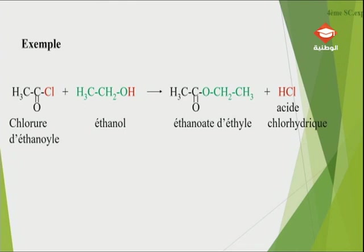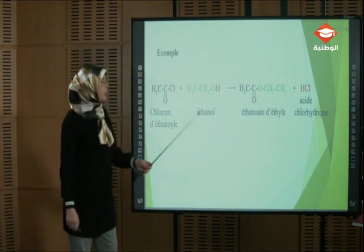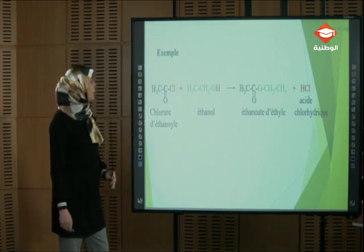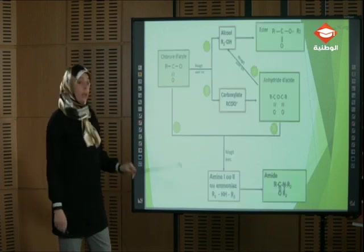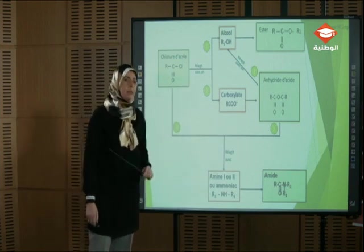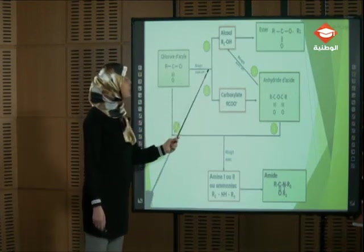Exemple : le chlorure d'éthanoïl réagit avec l'éthanol pour former l'éthanoate d'éthyle et l'acide chlorhydrique. L'estère contient deux carbones de chaque côté. Comme on a vu dans la première séance, la nomenclature des estères : c'est l'éthanoate d'éthyle. Pour le chlorure d'acide à deux carbones, c'est le chlorure d'éthanoïl. Je reviens à chaque fois à cette carte conceptuelle qui facilite énormément le travail. On a vu le passage numéro 1, on va passer au passage numéro 2.